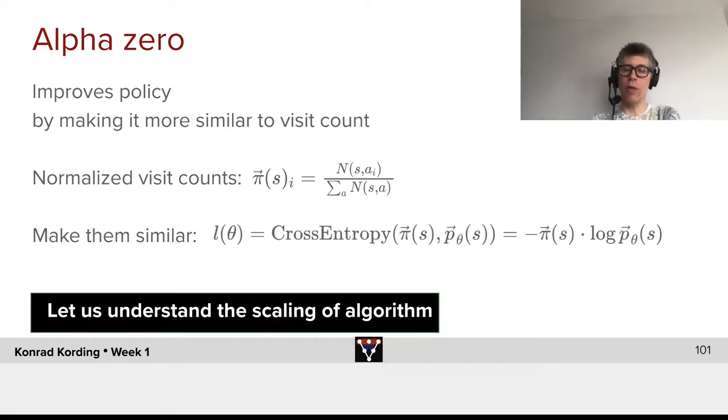And what we want to do is make them most similar. In deep learning, that will generally mean that we need a cost function that measures how similar they are. So what we'll have here is the loss as a function of θ is the cross entropy of π(s) and p_θ(s), which is just minus π(s) times log p_θ(s). And this is now something that we can optimize meaningfully.